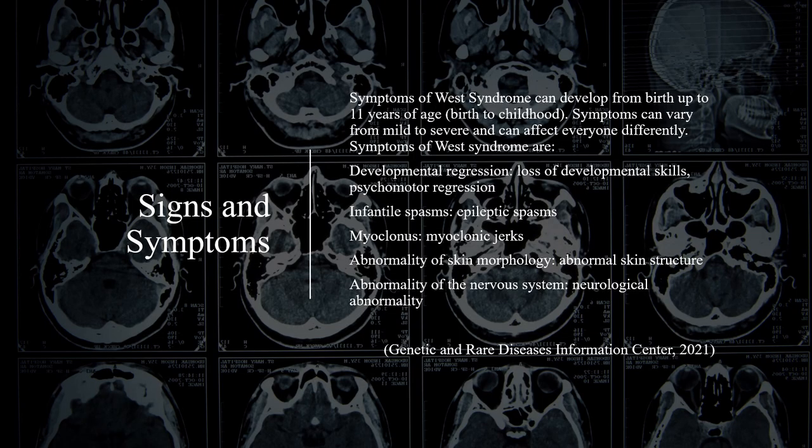Symptoms of West Syndrome can develop from birth up to 11 years of age, and can vary from mild to severe, affecting everyone differently. Symptoms include developmental regression, loss of developmental skills, psychomotor regression, infantile spasms, epileptic spasms, myoclonus, myoclonic jerks, abnormality of skin morphology or abnormal skin structure, and abnormality of the nervous system.